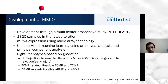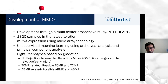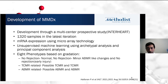MMDX was developed through a multicenter prospective study called INTERHEART. It was iterative — the first round had about 300 samples, the second about 800 myocardial samples, and the latest iteration has about 1,320 samples. They measured mRNA expression using microarray technology with unsupervised and supervised machine learning using archetypal and principal component analysis to produce eight phenotypes: normal, no rejection with minor ABMR-like changes, no rejection with early injury, possible TCMR, definitive TCMR, possible ABMR, and definitive ABMR.